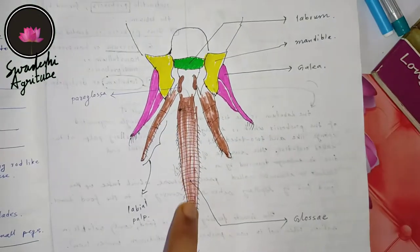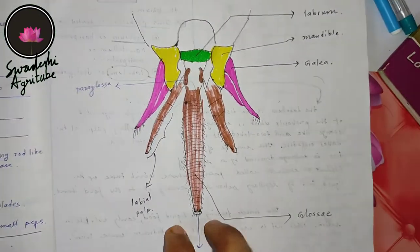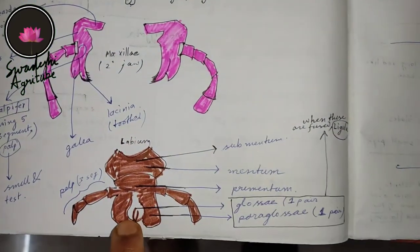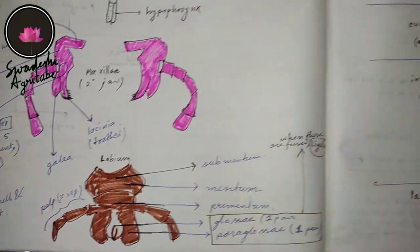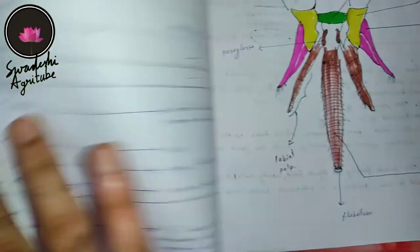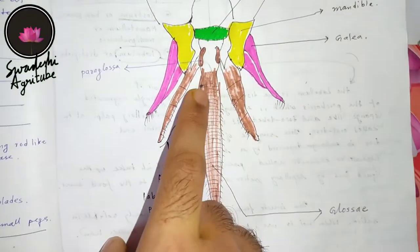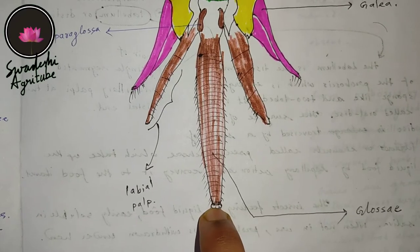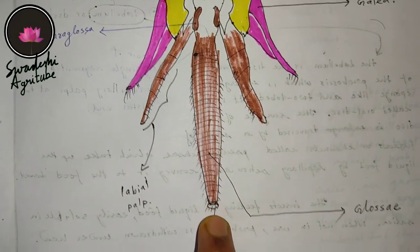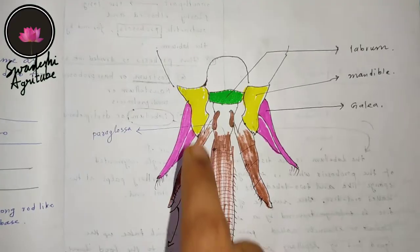Talking about the glossa, you can see in this image this long cylinder-like structure is actually a modification of the glossa. It is hairy, and there is a small flat portion with no hair — that is called the flabellum.